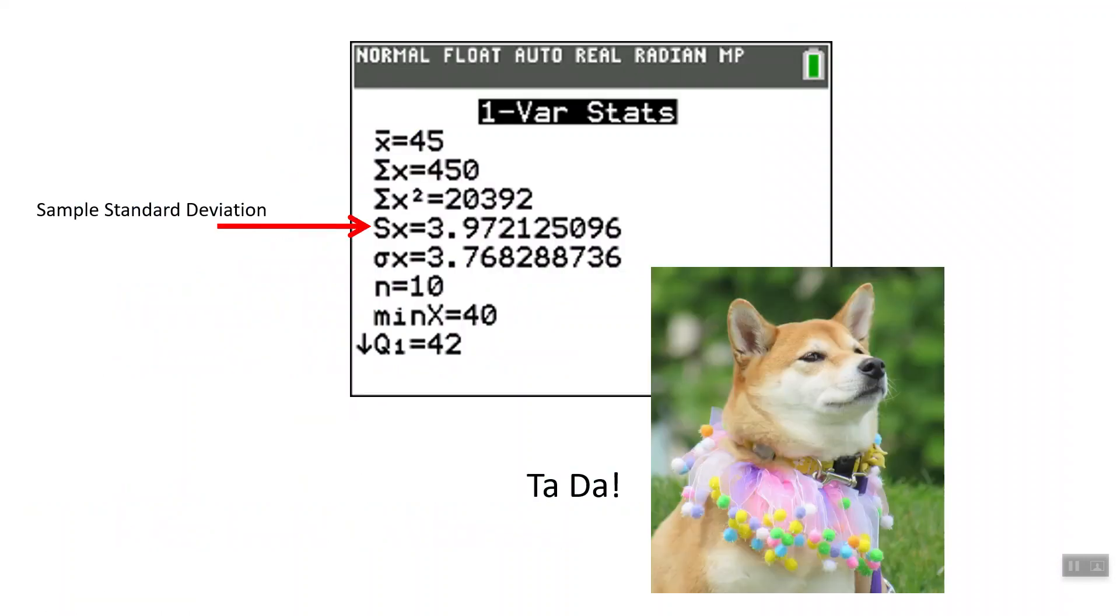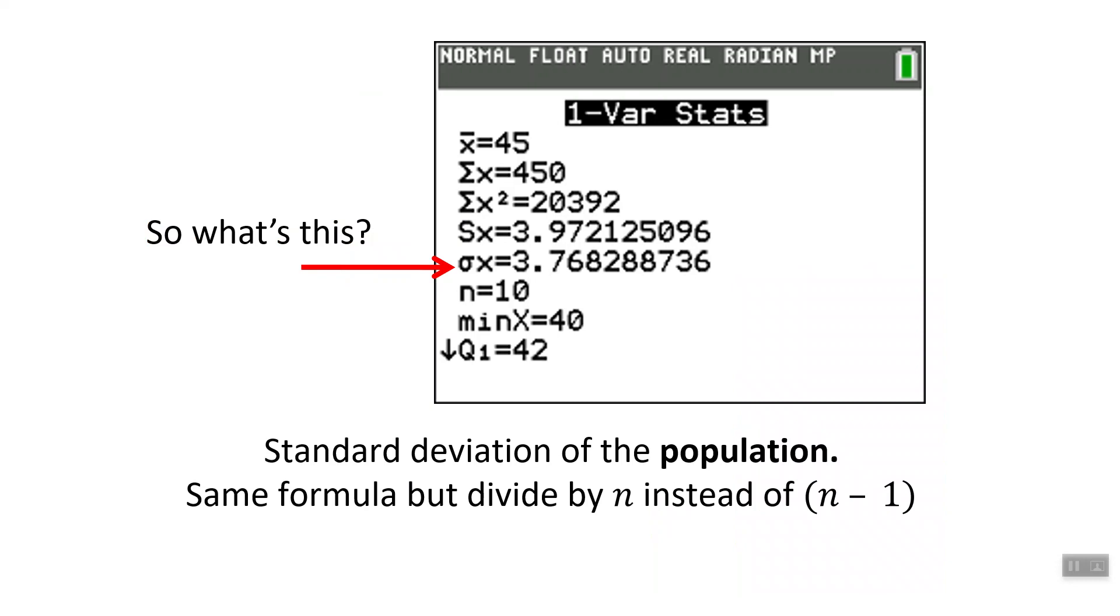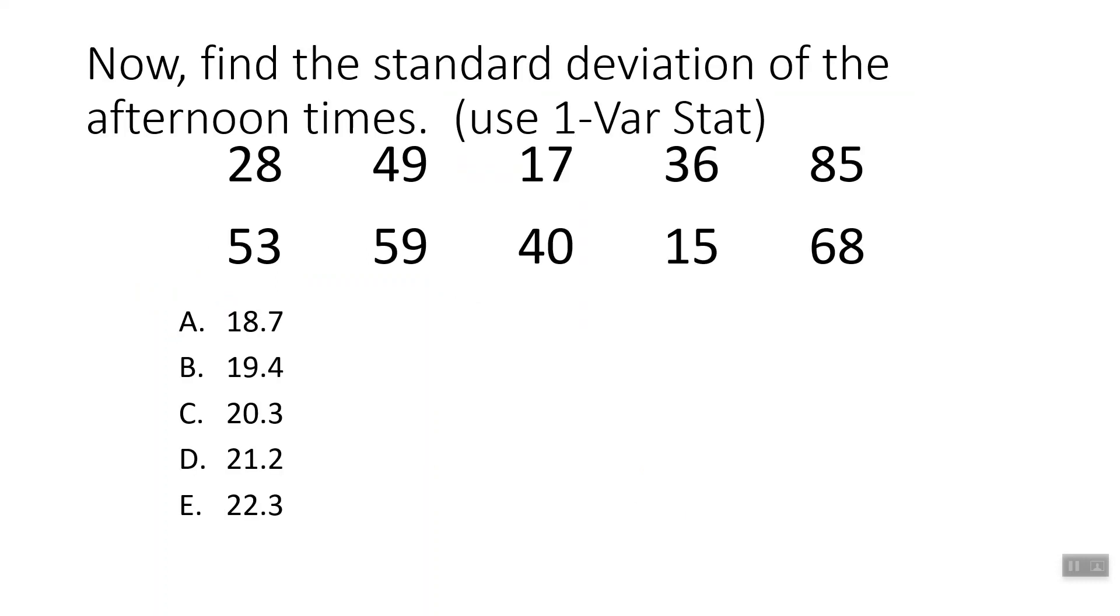There's our standard deviation and there's a puppy. I know you need some cheering up. This other guy here, that is our population standard deviation. If you notice, it's always a little bit smaller because we're dividing by n instead of n minus one. We only use that one if we have a whole population, and it said we took a sample, so we're not going to use that one. We will rarely use that one.